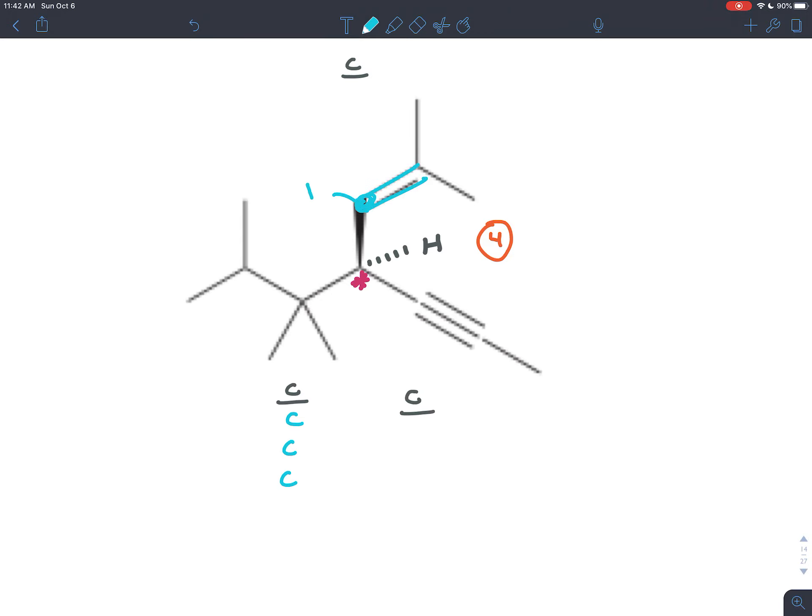The carbon above is bonded to a carbon once, a carbon twice, and a hydrogen. So carbon, carbon, hydrogen. We're putting those in descending atomic number. And the carbon here is bonded to a carbon, a carbon, and a carbon three times. So carbon, carbon, carbon.